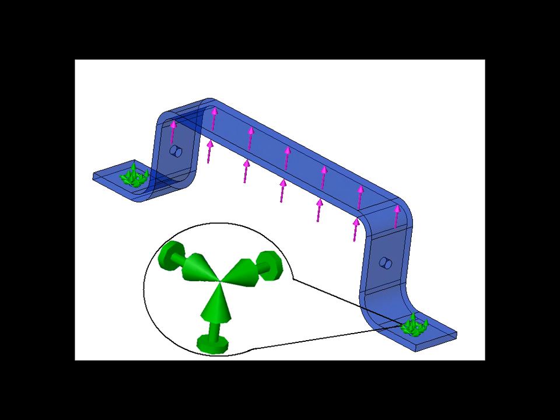The software shows the loads and fixtures using symbols. Here the fixtures are shown as green arrows and the loads are depicted by the purple arrows, in this case a pressure.